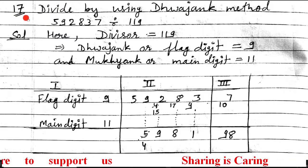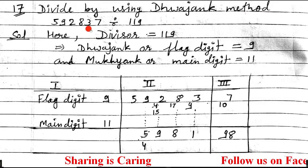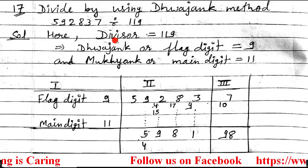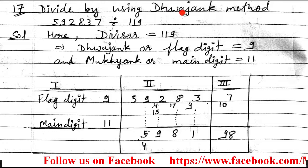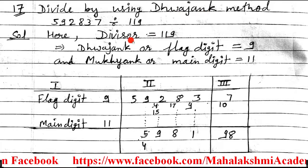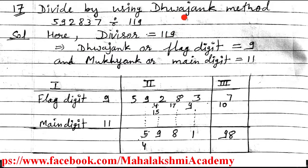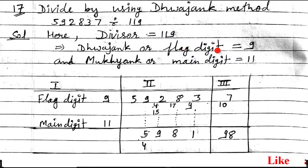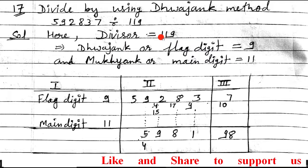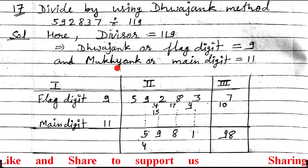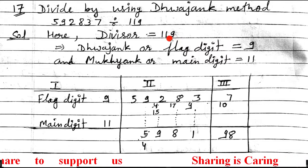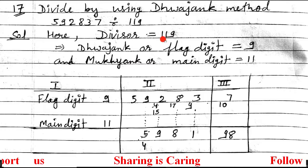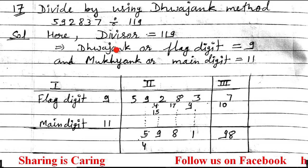Question 17 is: divide by using the Dwajang method. Here the divisor is 190. First write down 190. Dwajang means flag digit — that's why this method is named the Dwajang method. How to select Dwajang from the divisor: from the back side, select the first number and appoint it as the flag digit; remaining digits form the Mukhyang. So you split the complete divisor into two groups. Dwajang (flag digit) is 9, the unit place digit. Mukhyang (main digit) is 11, the remaining digits.